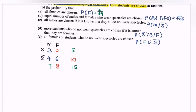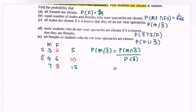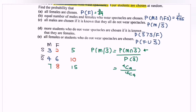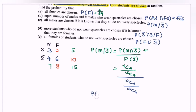For part C, all males are chosen given that they do not wear spectacles. We expand the conditional probability formula: P(male ∩ no specs) over P(no specs). We need 4 students who are male and do not wear specs — that's 4C4 over 15C4 for the numerator. For the denominator, there are 10 students who do not wear specs: 10C4 over 15C4. The result is P(male | no specs) = 1 over 210.